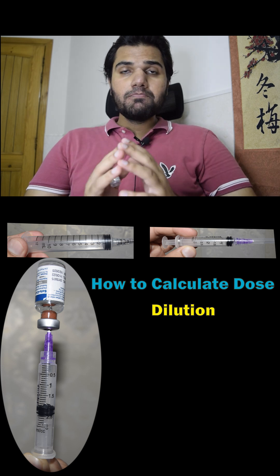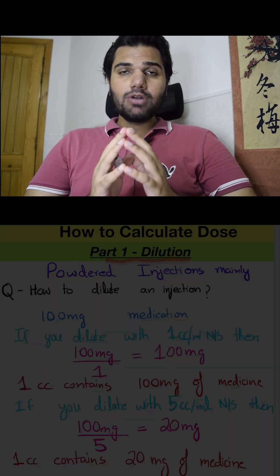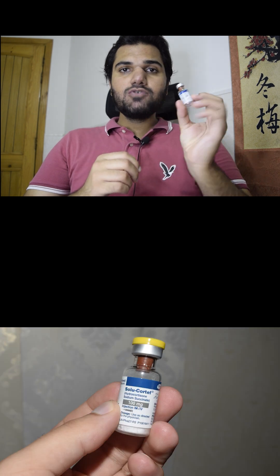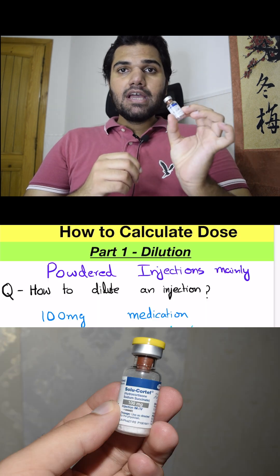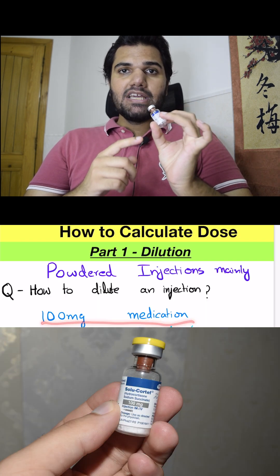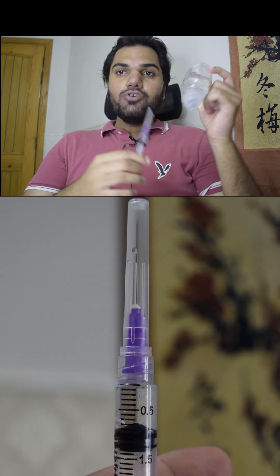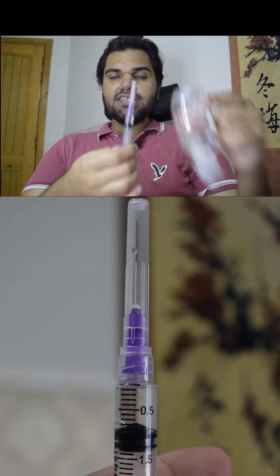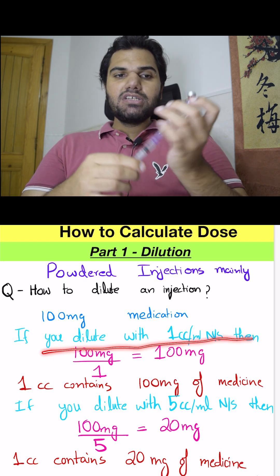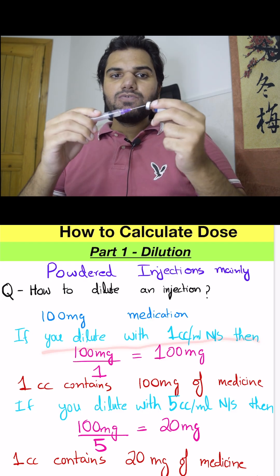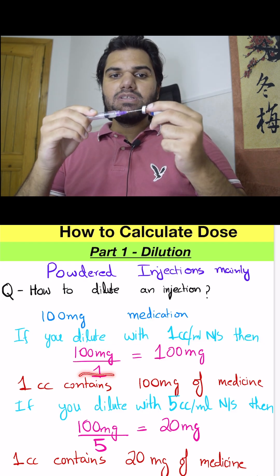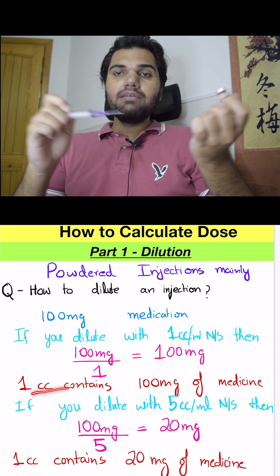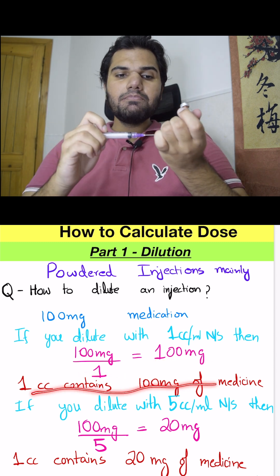How to calculate dose? Part 1 is about dilution. This is mainly for the powdered injection — we have Solocortef, which has 100 mg of medication in it. If you take 1 cc of normal saline in the syringe and dilute this 100 mg of Solocortef with 1 ml of normal saline, then each ml contains 100 mg of this medication.